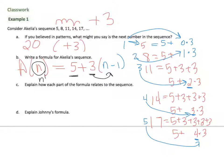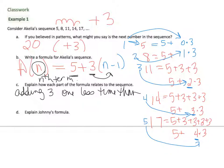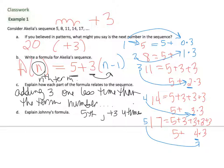The n in the formula means the nth term of the sequence. To explain how each part of the formula relates to the sequence: to find each term, you are adding 3, one less time than the term number. To get the fifth term, you add 3 four times. Achilles' formula is an explicit formula — I can jump in at any point.